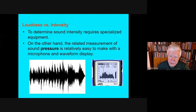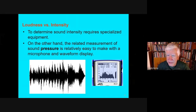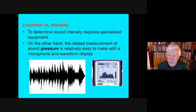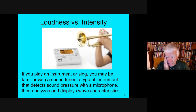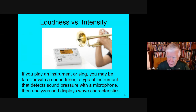Sound pressure is often used as a substitute for making the actual intensity measurement. Most of the time, all we need is a microphone — it can measure the pressure of a wave that strikes it, and that can be displayed as a waveform in a digital instrument. If you play an instrument, a sound tuner can display both the frequency and the intensity characteristics by using the microphone.